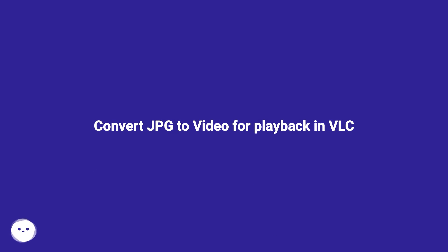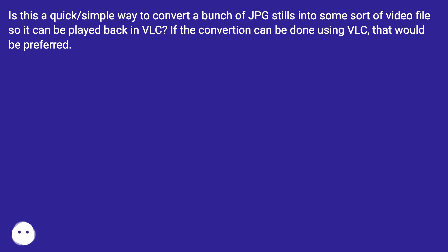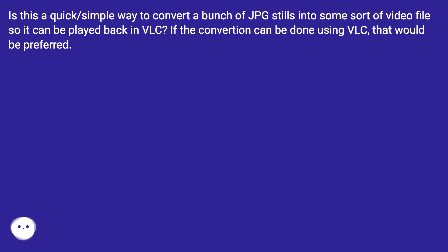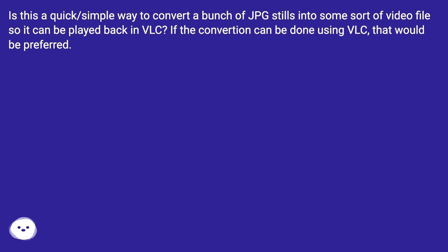Is there a quick and simple way to convert a bunch of JPG stills into some sort of video file so it can be played back in VLC? If the conversion can be done using VLC, that would be preferred.